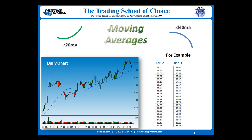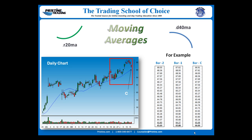Finally, for the current bar, once again the oldest price gets dropped off because we're taking the last 20, and the most current price gets added in, and the new average comes out to 66.00. This gets added to the chart, forming a moving average that is still continuing higher.